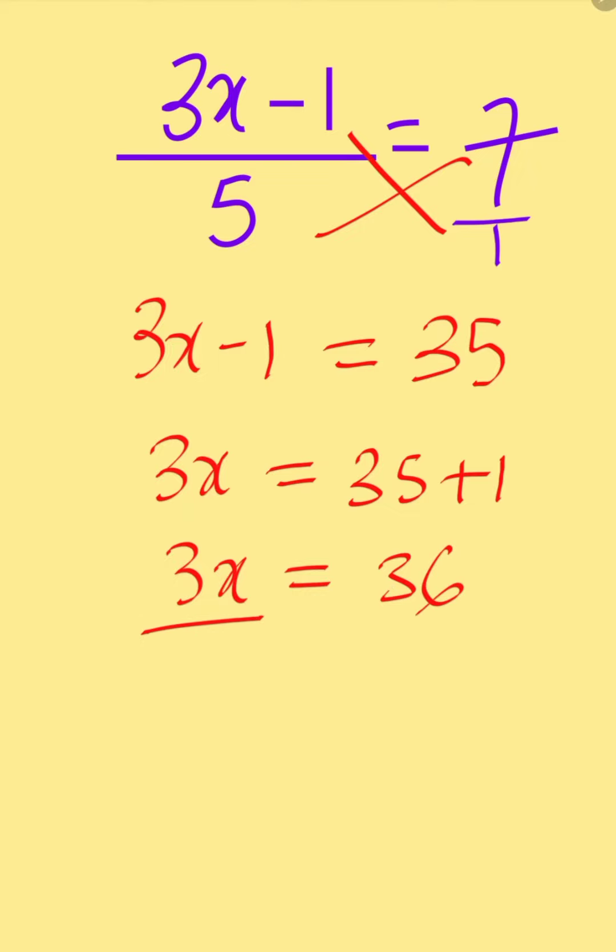Hence, to get the value of x, you have to divide both sides by 3. By this division, you notice that 3 will cancel 3, leaving us with x equals 36 over 3. And when you divide 36 by 3, you will have 12.